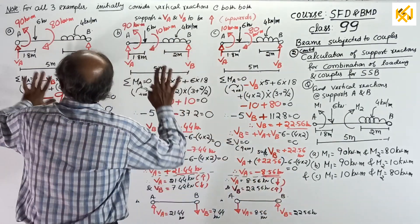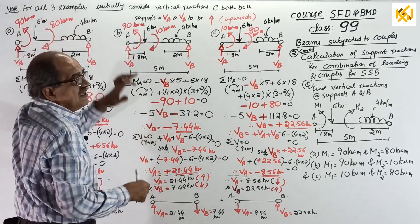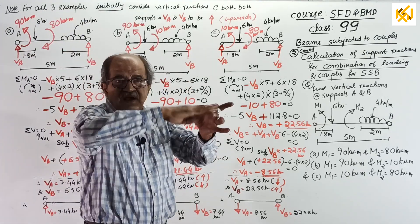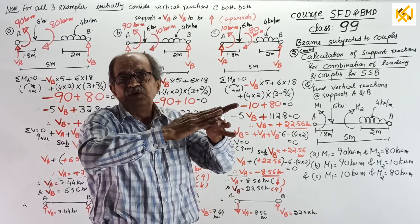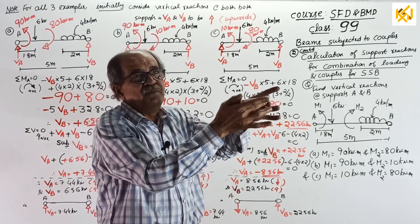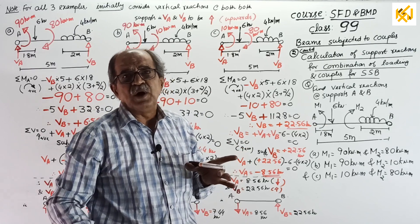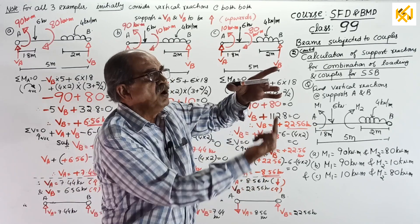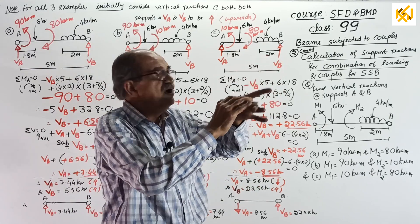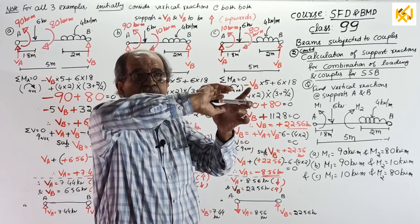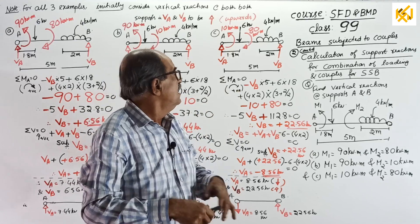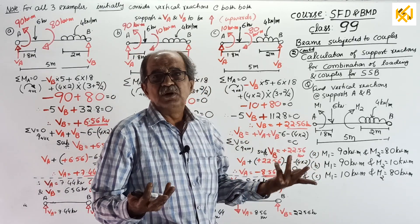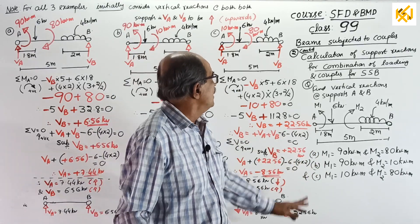Start. Note, for all three examples, see, loading and couple both are there. If only loading is there, you know, for a simple support beam, of course, not valid when overhangs are there, both reactions are up. And, but if only couples are there, you know last time, one reaction will come up, one will come down. But here, you can't tell. Mix up. So, when mix up is there, do one thing.